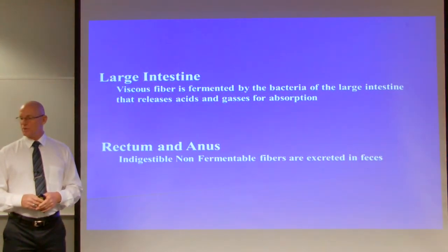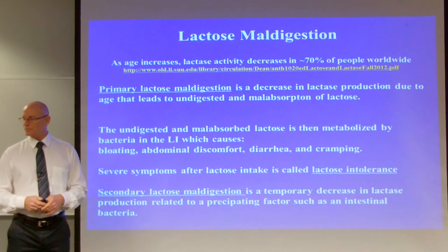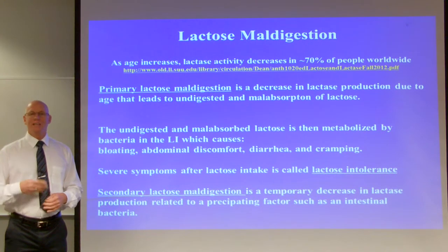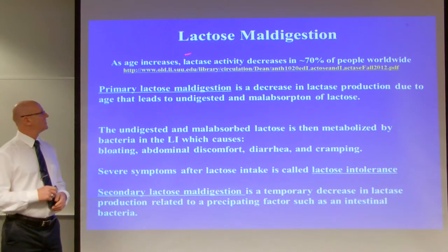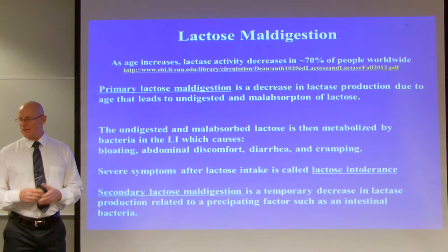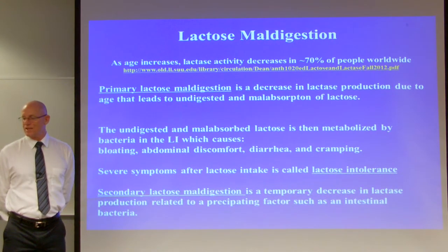In the large intestine, viscous fiber is fermented by bacteria, releasing acids and gases for absorption. Non-fermentable insoluble fibers are excreted in the feces. Regarding lactose maldigestion: as age increases, lactase activity decreases in approximately 70% of the population worldwide. Primary lactose maldigestion is a decrease in lactase production due to age, leading to undigested and malabsorbed lactose that is metabolized by bacteria in the large intestine, causing bloating, abdominal discomfort, diarrhea, and cramping.